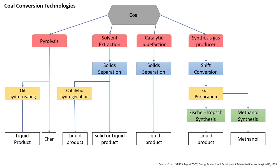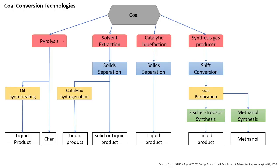Moving on to coal conversion technologies, these are divided into 2 types: coal to liquid products and coal to gaseous products. For coal to liquid conversion, there are 4 primary technologies: pyrolysis, solvent extraction, catalytic liquefaction, and synthesis gas production.